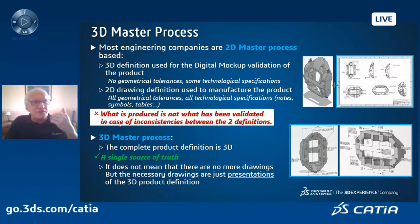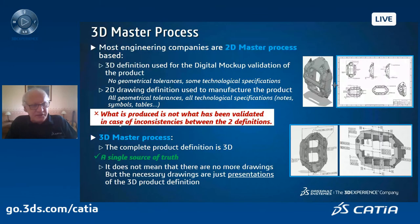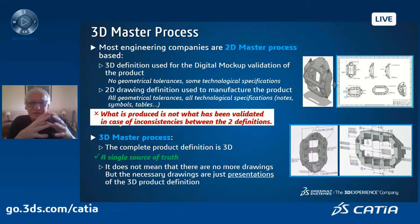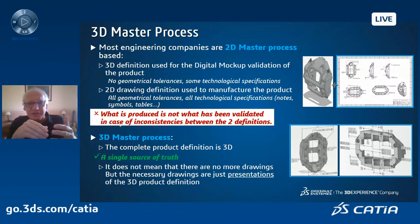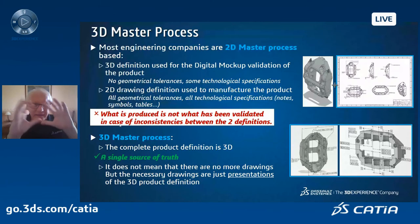Because of this inconsistency, you have a lot of errors at the manufacturing level, and those errors are really expensive to the company. The main idea of 3D master — sometimes called model-based definition — is that you can tolerance, dimension, and add all manufacturing, inspection, or after sales information in the 3D document itself. The drawings generated from the 3D master definition are just a capture, like a screenshot, that you can distribute and share to downstream processes and suppliers who are in charge of manufacturing a given part.